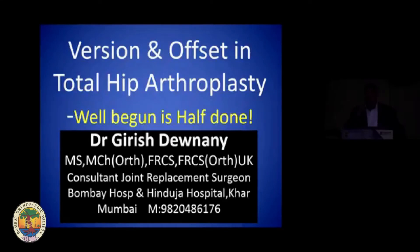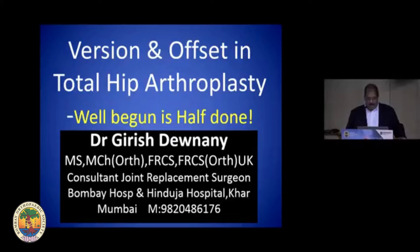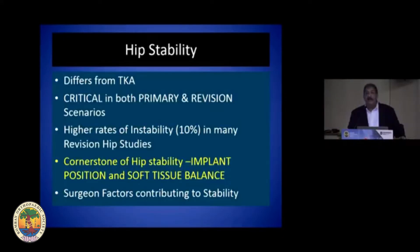I'm going to start the ball rolling. My first topic in this session — basics of hip arthroplasty revisited — covers views on version and offset in total hip arthroplasty. As we always say, well-begun is half done. THR or hip arthroplasty differs from knee arthroplasty in terms of stability, and stability in hip arthroplasty depends primarily on two components: implant position and soft tissue balance.